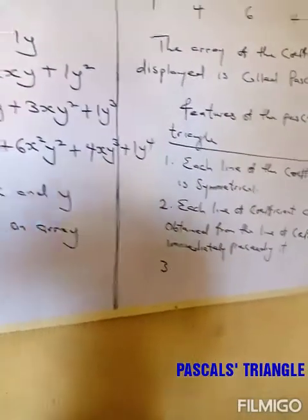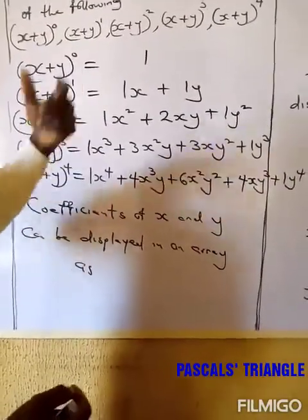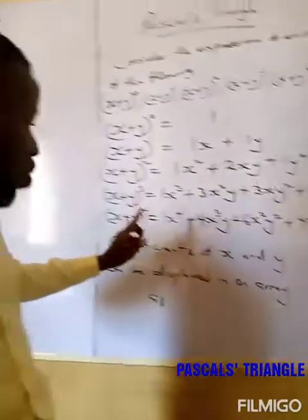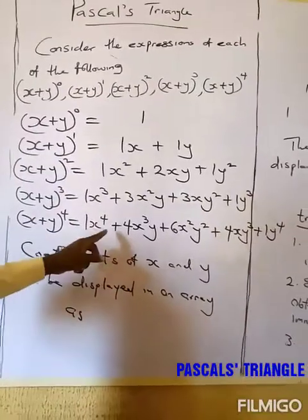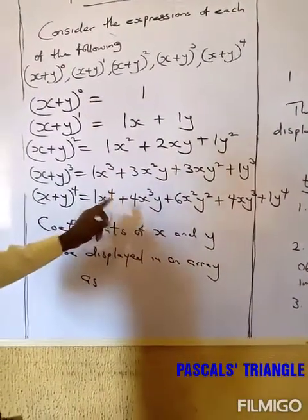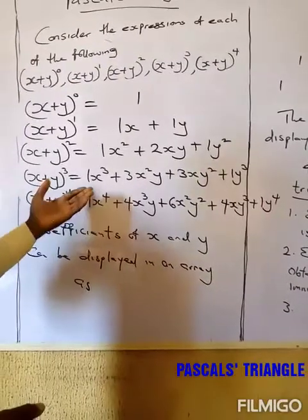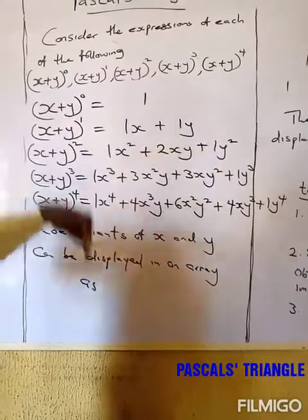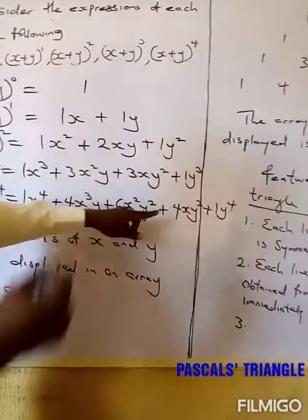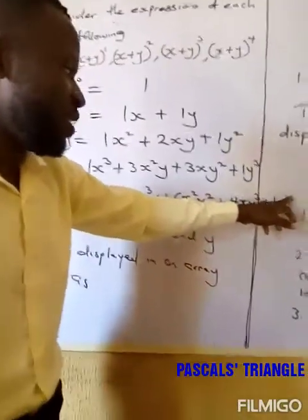Feature three: as the expansion increases, the power of S drops while the power of Y increases. For example, in (s+y)^4, the power of S starts at 4 and drops: s^4, then s^3, then s^2, then s^1, until S is raised to 0 — which equals 1 — and we are left with only y raised to 4. Note that anything raised to the power of 0 is 1.